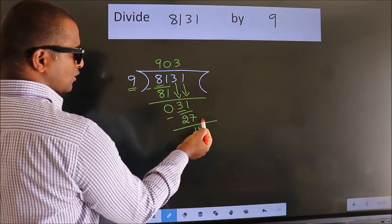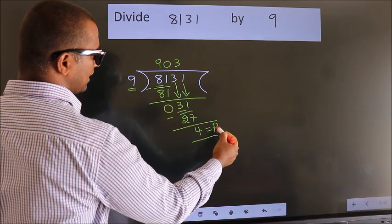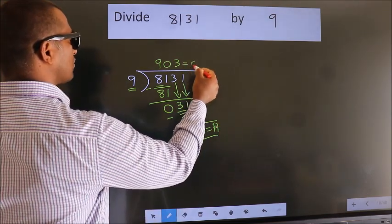No more numbers to bring down, so we stop here. This is our remainder. This is our quotient.